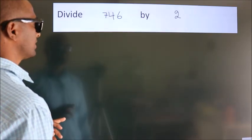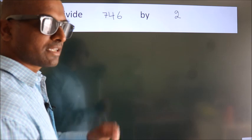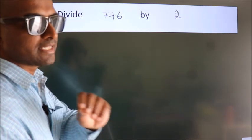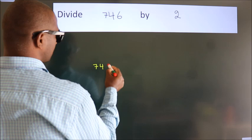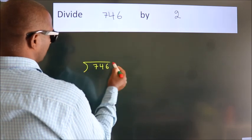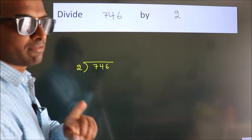Divide 746 by 2. To do this division, we should frame it in this way. 746 here, 2 here. This is your step 1.